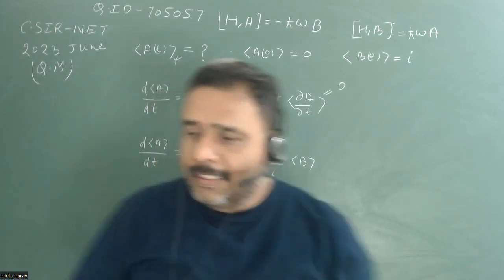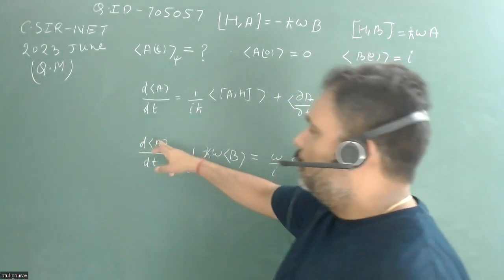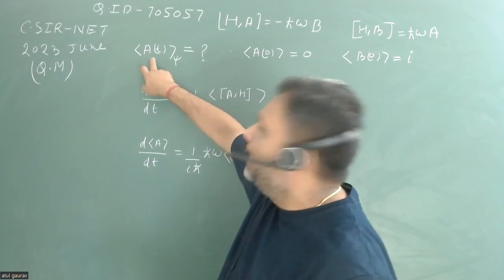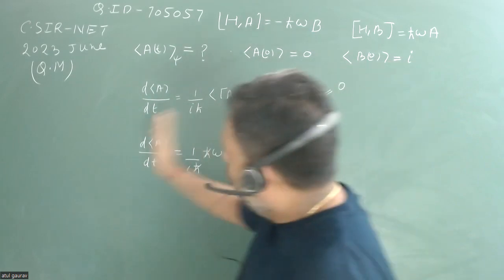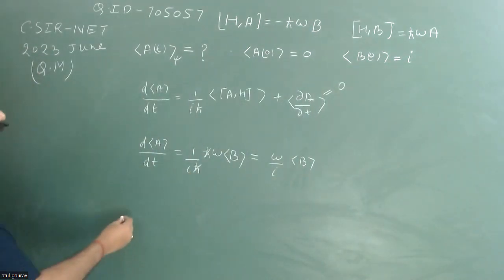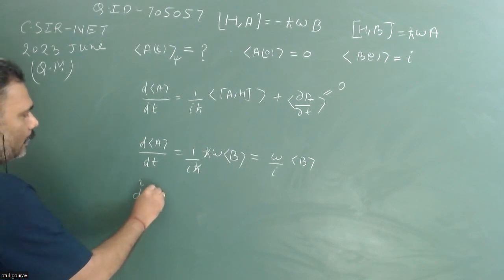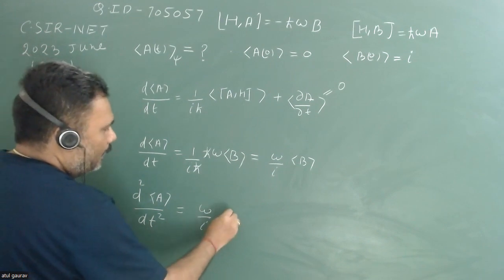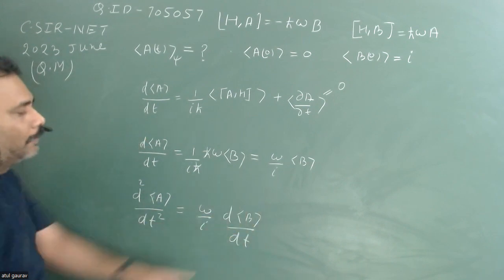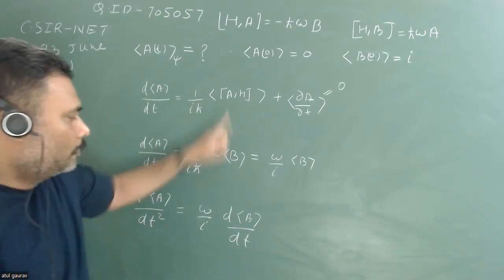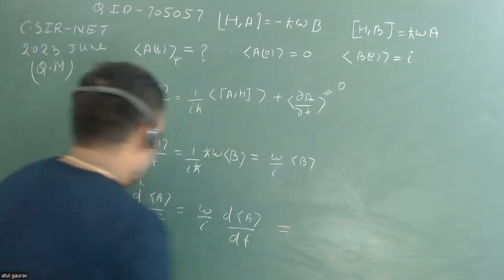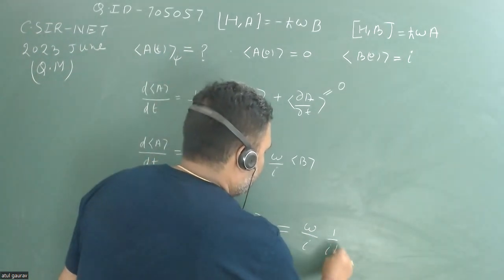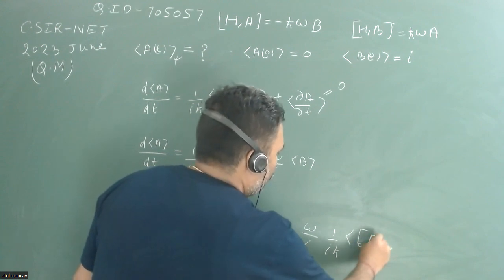Now here is the catch: the time evolution of A depends on B, but we need to find the time evolution of A only. So we differentiate both sides again to get d²⟨A⟩/dt² = (ω/i) times d⟨B⟩/dt. We again apply Ehrenfest's theorem for d⟨B⟩/dt, substituting the commutator [B, H] = −ℏωA.